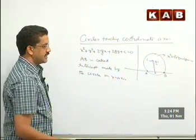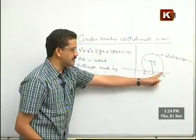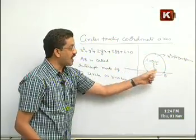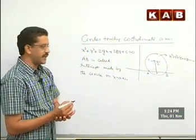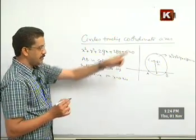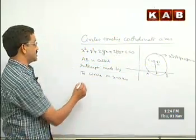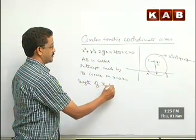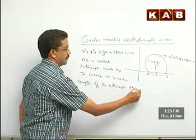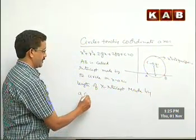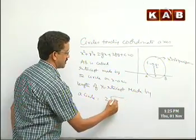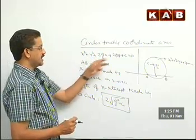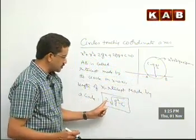The length of the intercept made by a circle on the x-axis — that is our main objective. Its length is 2√(g² − c). This is very important. If you know the circle equation, you know the length of AB: the length of AB is 2√(g² − c).